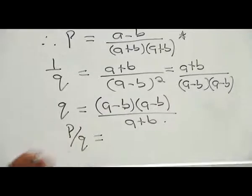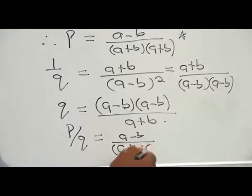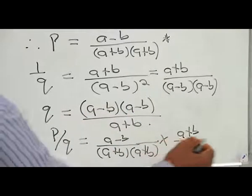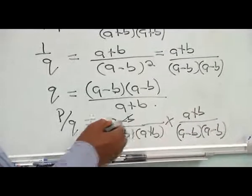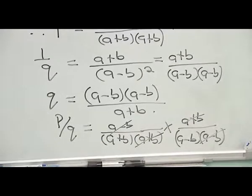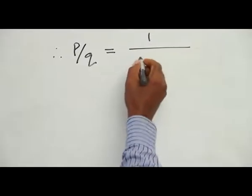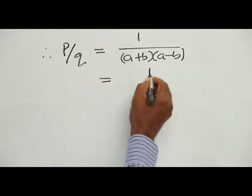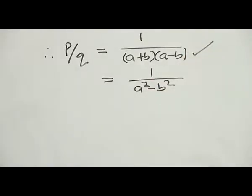Now P over Q becomes [A minus B over (A plus B)(A plus B)] times [(A minus B)(A minus B) over (A plus B)]. We observe that (A minus B) terms cancel and (A plus B) terms cancel as well, leaving 1 in the numerator over (A plus B)(A minus B). This simplifies to 1 over (A squared minus B squared), which is a better lowest-term solution.